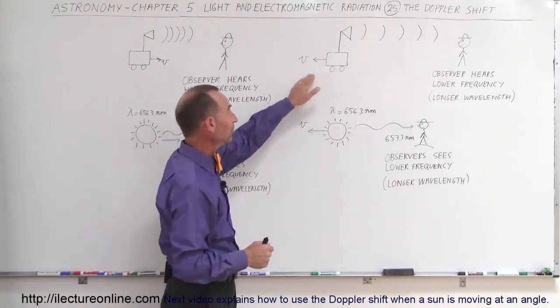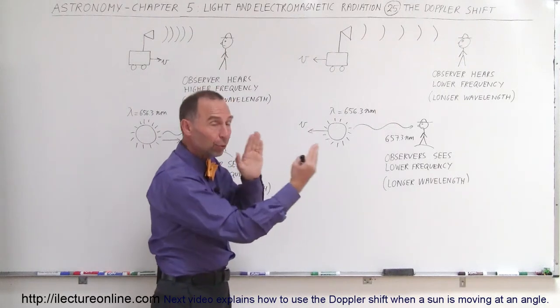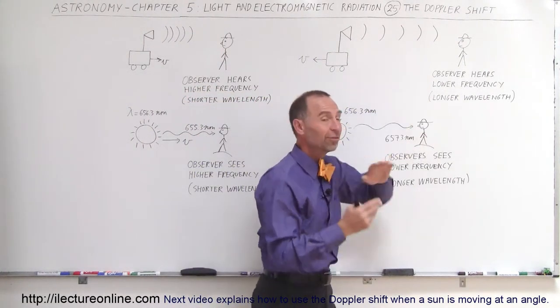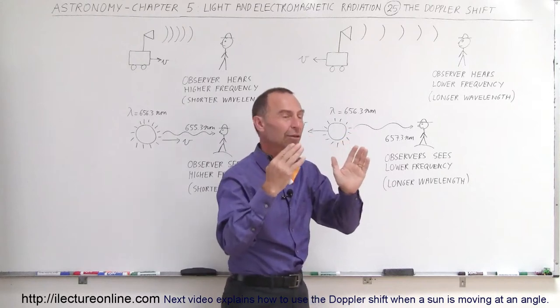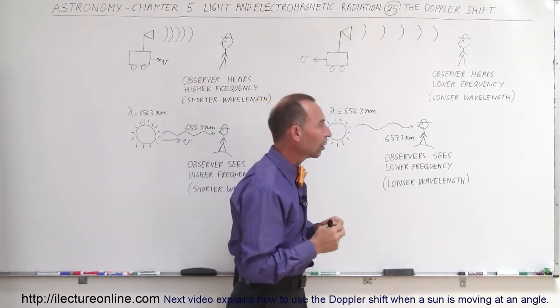If the object is moving away from us, it elongates the distance between the wavelengths. The observer hears a lower frequency because now we hear a longer wavelength.